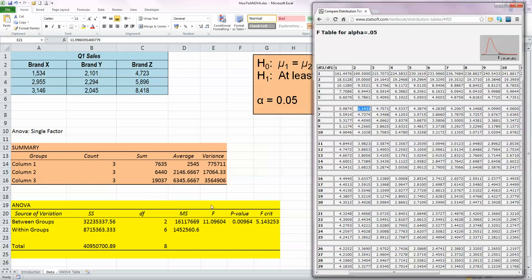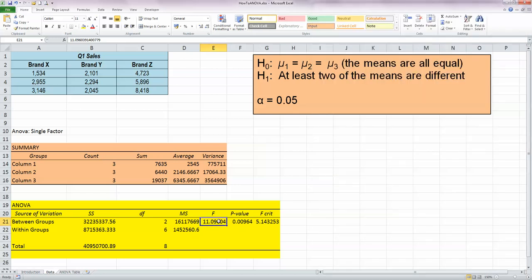Now if I look over at my ANOVA table generated by Excel over here, we can see that we have the same value generated here as well, 5.14325 rounded up. And what this table is telling us is that we need to look at our F statistic. We got a result of 11.09604. That value is greater than our critical value. And what that means is that we can then reject the null hypothesis. So our critical, our F statistic, 11.09, is greater than the critical value of 5.143. Therefore, we reject the null hypothesis that all the means are equal, in favour of the alternative hypothesis that at least two of the means are different.